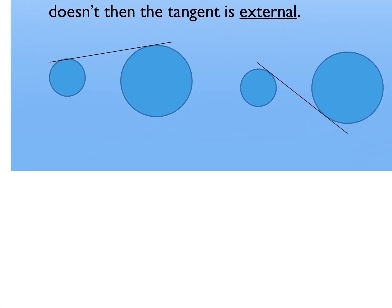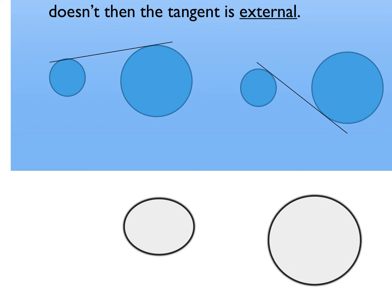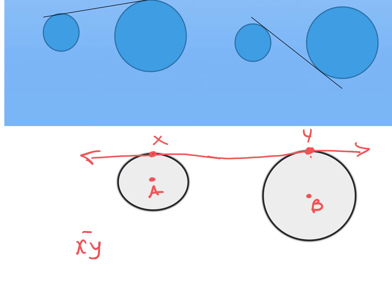Next we're going to talk about common internal versus common external tangent lines. A common tangent is a tangent that is common to both circles. For example, if I draw two circles, a tangent that skims and touches each circle in one point would be a tangent for both circles. That line XY is a tangent for circle A and also a tangent for circle B, making it a common tangent.